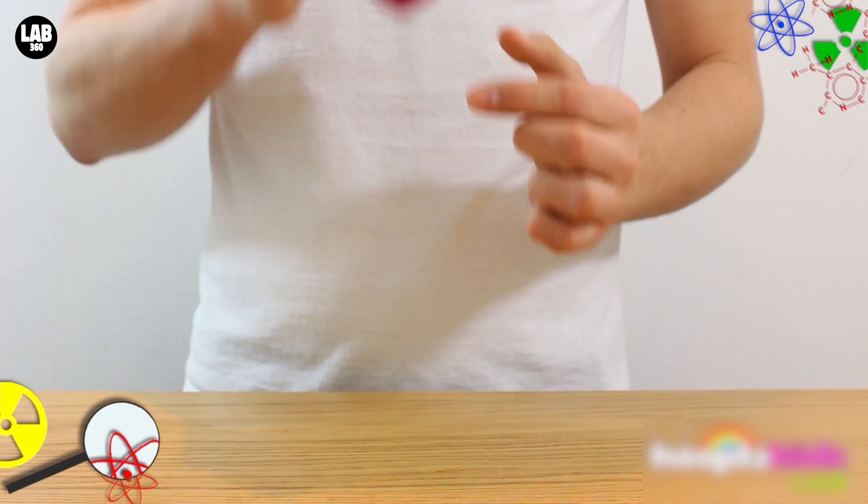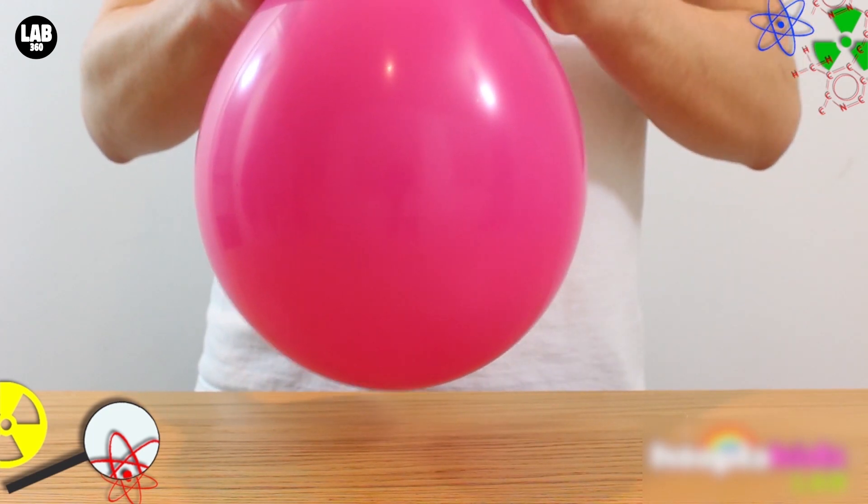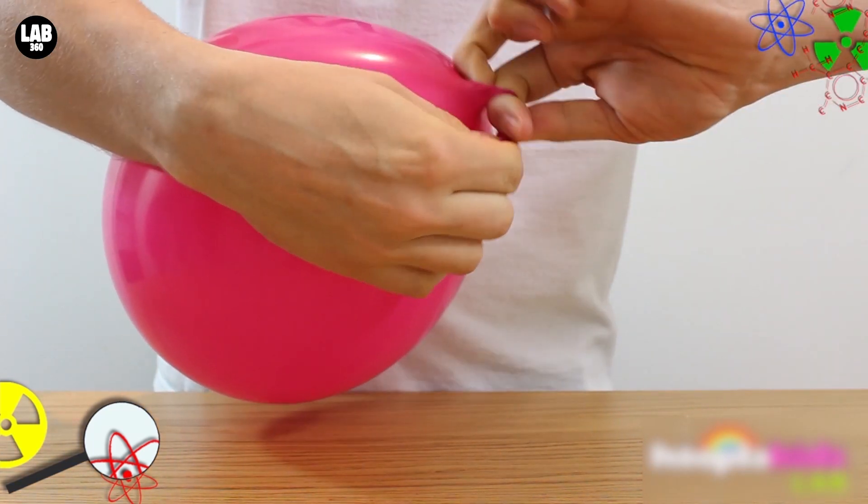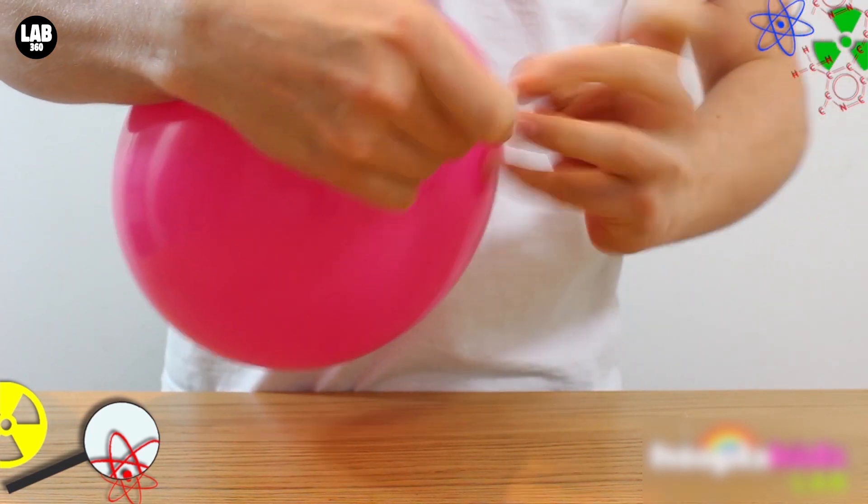Once you've put the water into the balloon, very carefully blow the rest of the balloon up, until it's about the same size as the first balloon. Then once again, carefully tie off the end of the balloon to make sure none of the air or the water escapes.